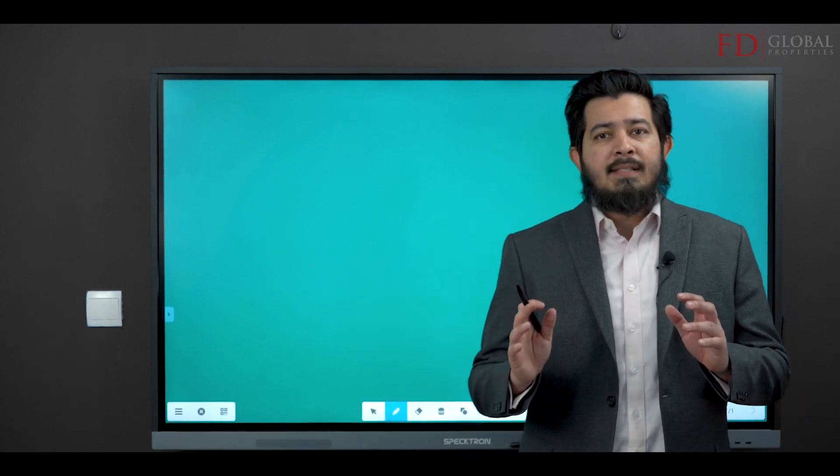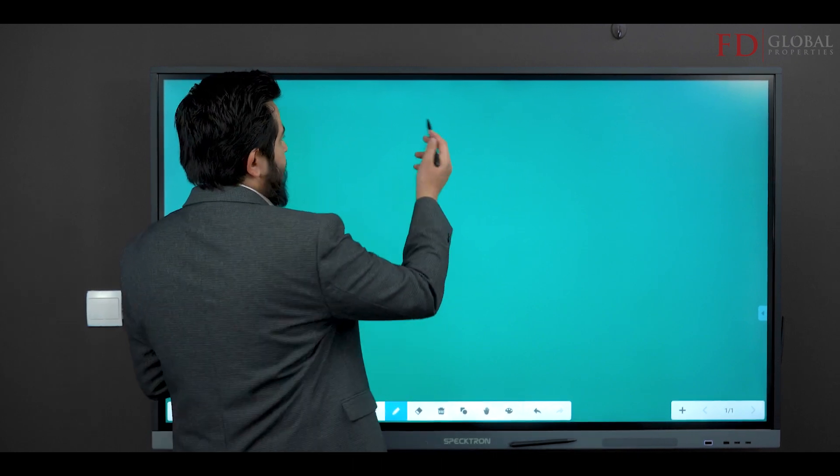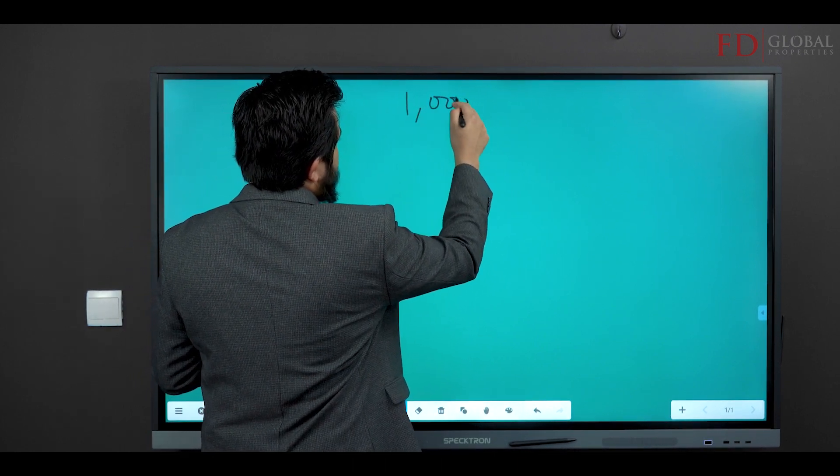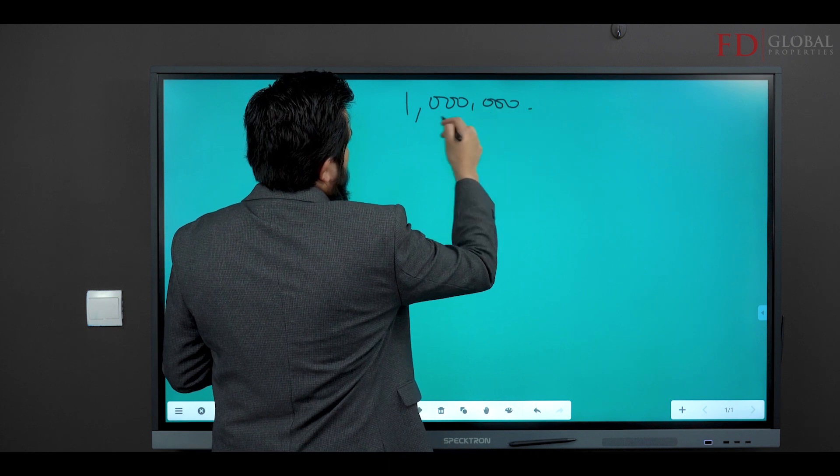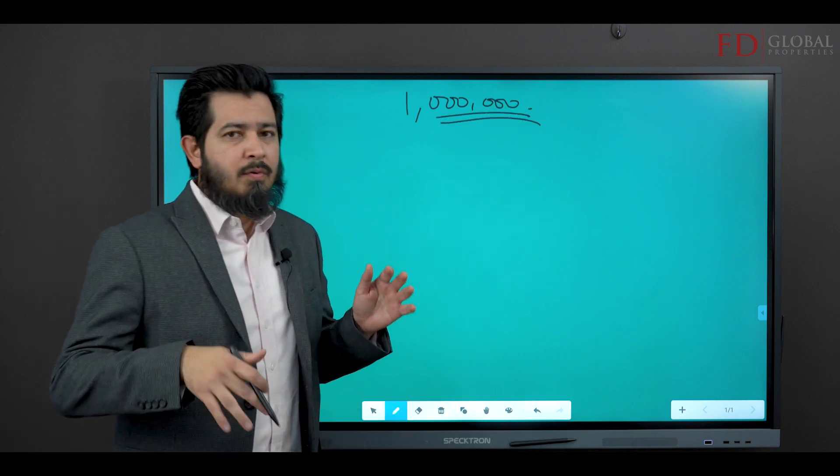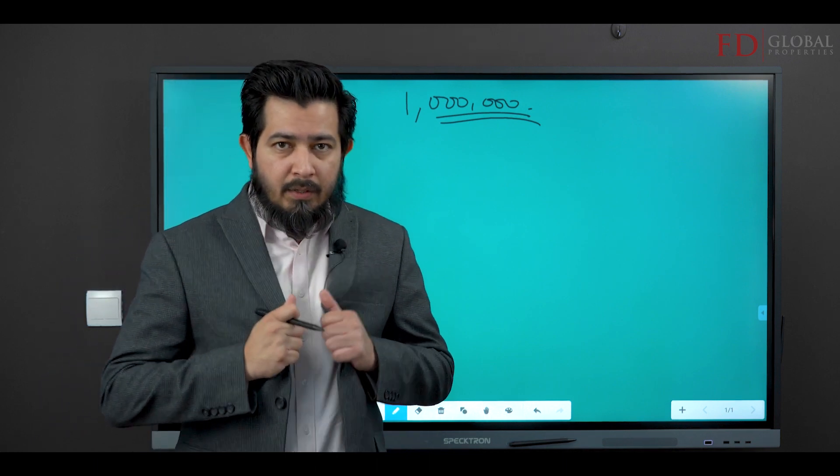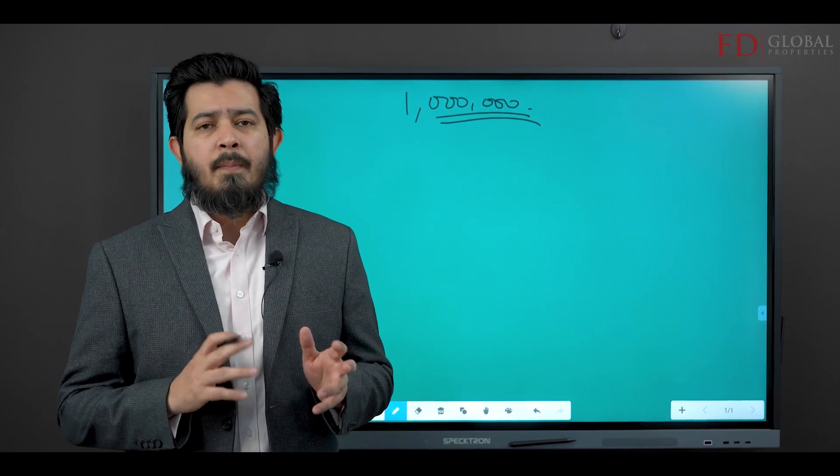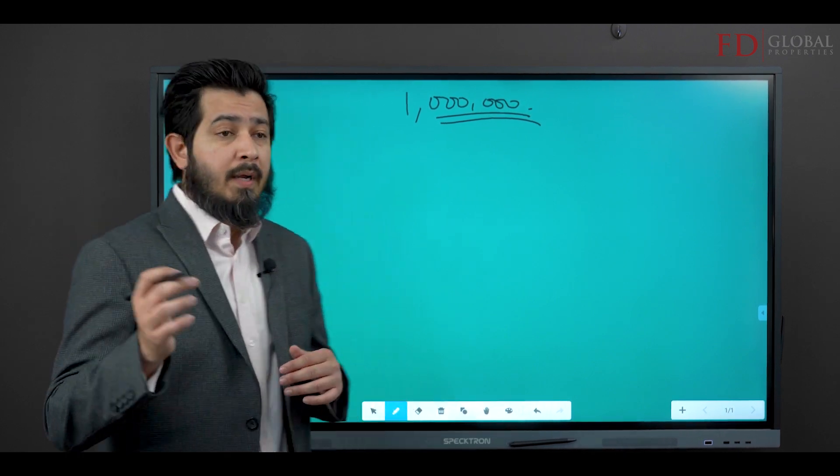Welcome back. Let's say the property you're looking to buy is about one million dirhams. It's a good round figure, easy to understand, and you can use the same principles and extrapolate them to any amount.